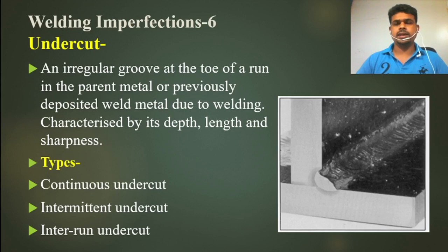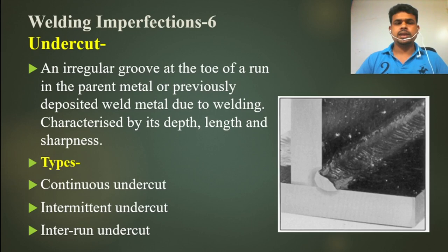The undercut can be continuous — that is called continuous undercut. Another type is intermediate undercut, where there is undercut in some areas and then some area is good with no undercut, then undercut starts again. Another type is interrun undercut, which occurs between passes — before another pass welding, inside you have the same characteristics of depth and sharpness. That is called internal undercut.